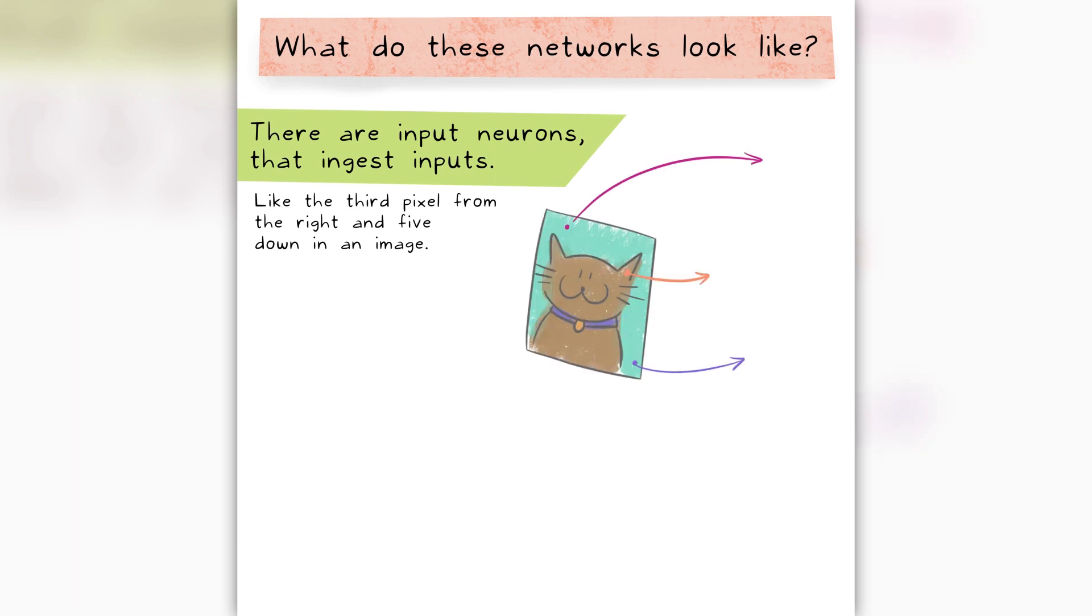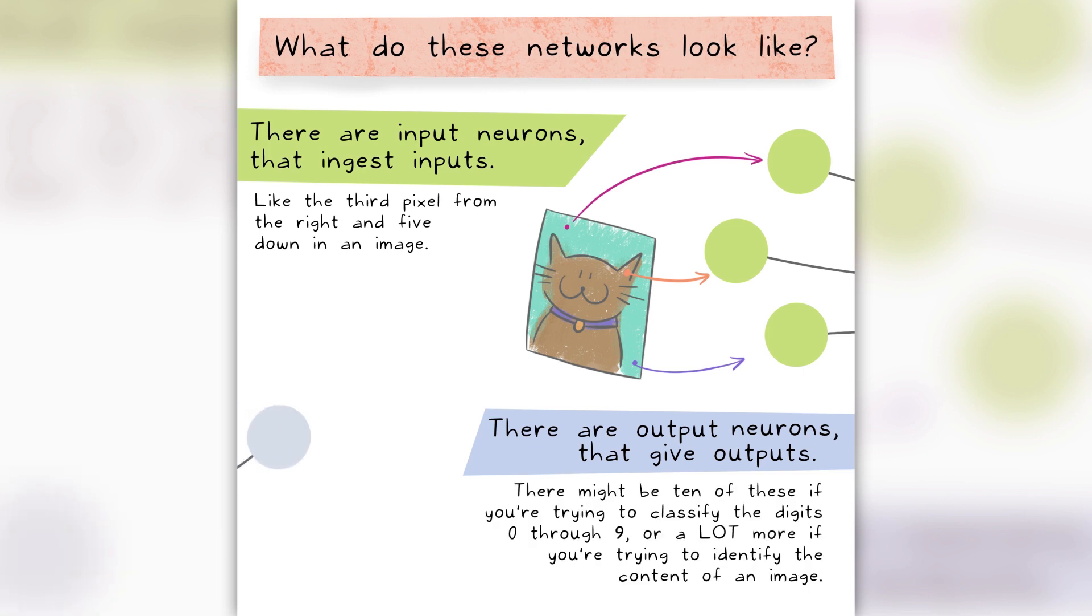What do these networks look like? There are input neurons that ingest inputs, like the third pixel from the right and five down in an image. There are output neurons that give outputs. There might be 10 of these if you're trying to classify the digits 0 through 9, or a lot more if you're trying to identify the content of an image.